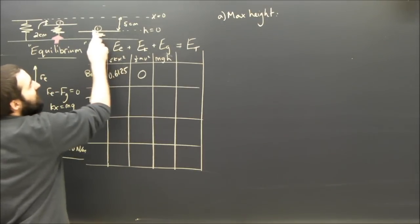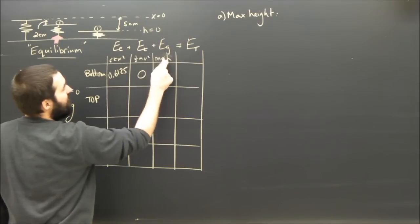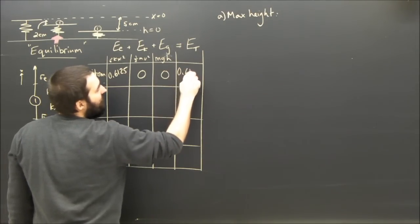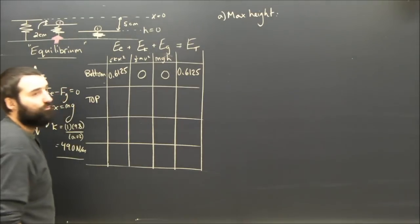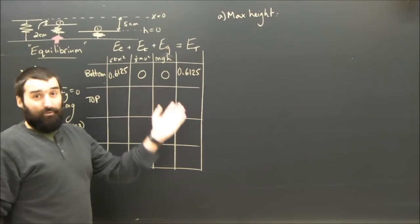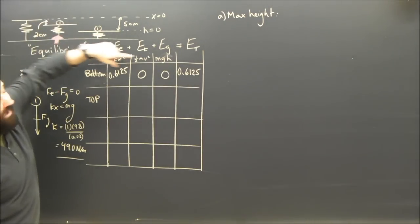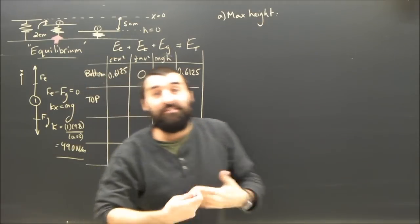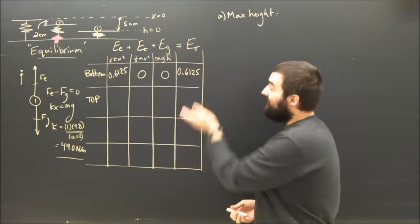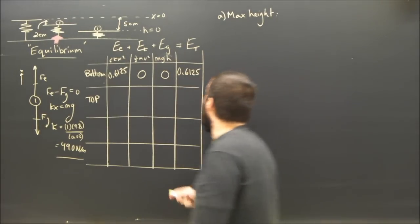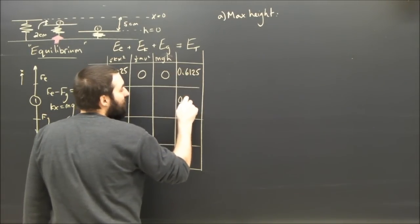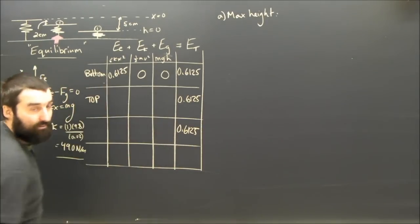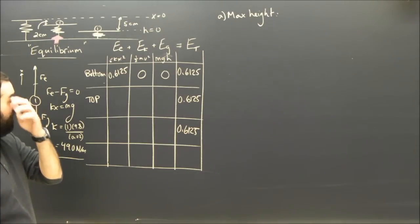What's the kinetic energy when it's at the bottom? You're about to let go, V is zero, so the kinetic energy is zero. And what's the potential energy due to gravity at the bottom? Well, H is zero, so MGH is obviously zero. So the total energy is equal to 0.6125 joules. The reason we did this at the bottom was because it's the only place that we know everything. We have to find the total energy somewhere. We found it at the bottom. The reason we have to find the total energy somewhere is because the law of conservation of energy tells us that if we know the total energy at one place, it's going to be equal everywhere else.